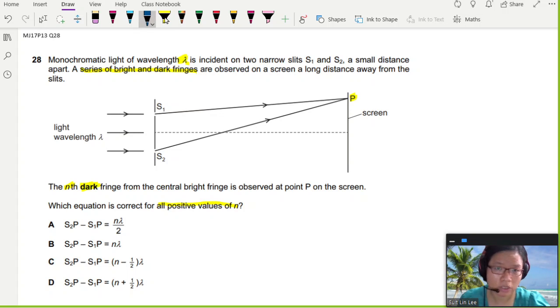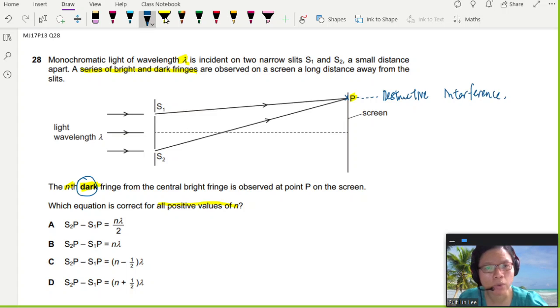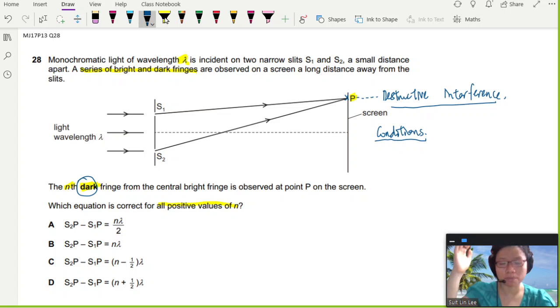First thing we need to do is we need to know that there is destructive interference because you have a dark fringe. So destructive interference. And you need to think a little bit about what are the conditions for destructive interference. The waves should meet out of phase so that the maximum will meet the minimum, minimum will meet the maximum and then they all cancel out. So the conditions here that is easy to recall is the phase angle will be 180 or π. If there are odd π's then they will meet slightly out of phase. If there are even π's they will meet in phase, then it will be constructive interference. So that would be π or the odd multiples of π.